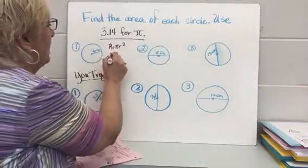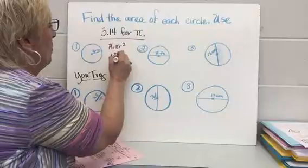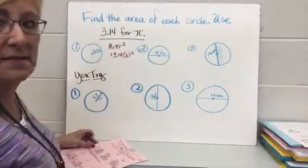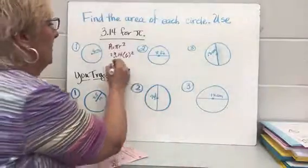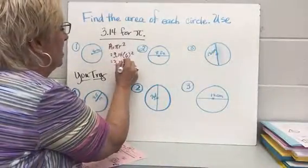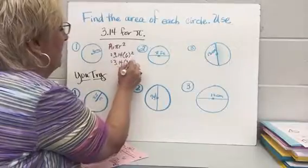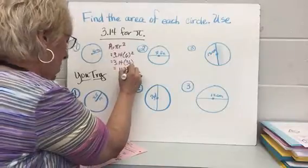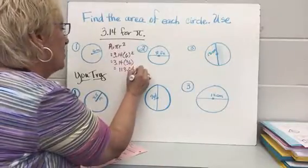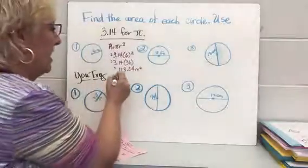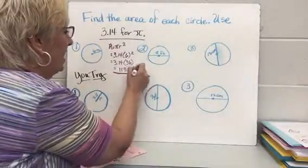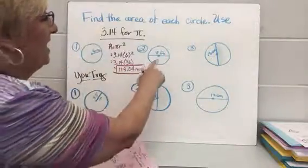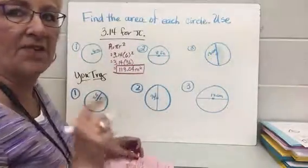So that's 3.14 times six squared. That does not mean six times two — it means six times six, so that's 3.14 times 36. That answer is going to be 113.04 meters squared, because meters is what's being measured and we're finding area, so the unit is meters squared.